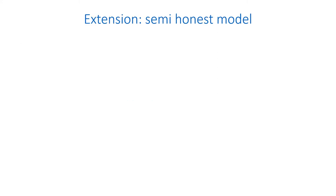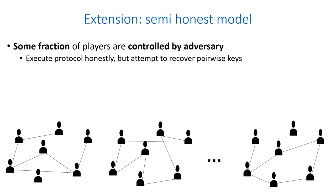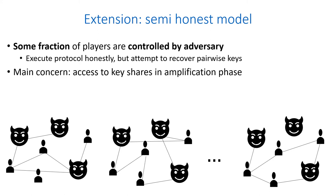Now we consider an extension to our protocol for dealing with a semi-honest participant model. In this model, some fraction of the players are controlled by an adversary. Those players execute the protocol honestly, but they attempt to recover pairwise keys. The main concern with such players is that they have access to the key shares sent in the amplification phase. In the following example, we can see key shares sent on multiple paths, where some of the paths include an adversary player. Key shares sent on such paths are known to the adversary, just like the key shares R1 and R2 in this example.